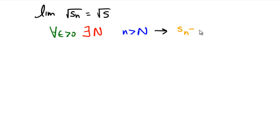Sn minus whatever that limit is can be made less than epsilon. So in other words, we can get arbitrarily close to the limit of a sequence.